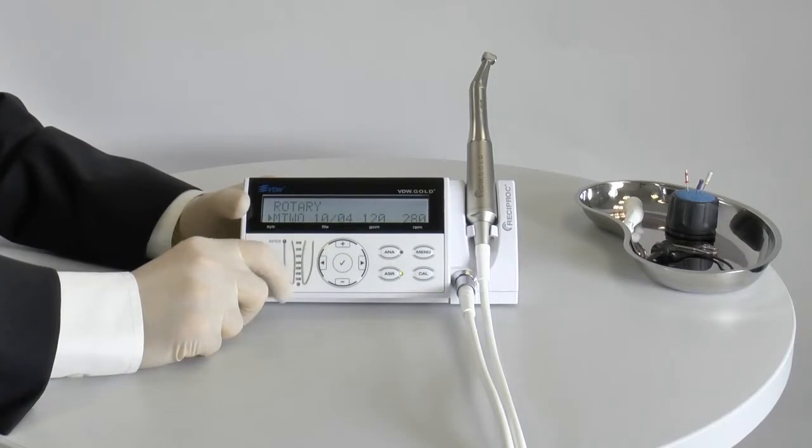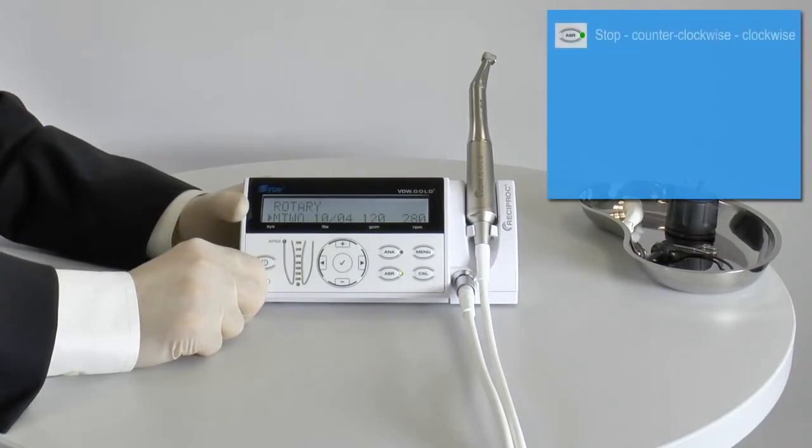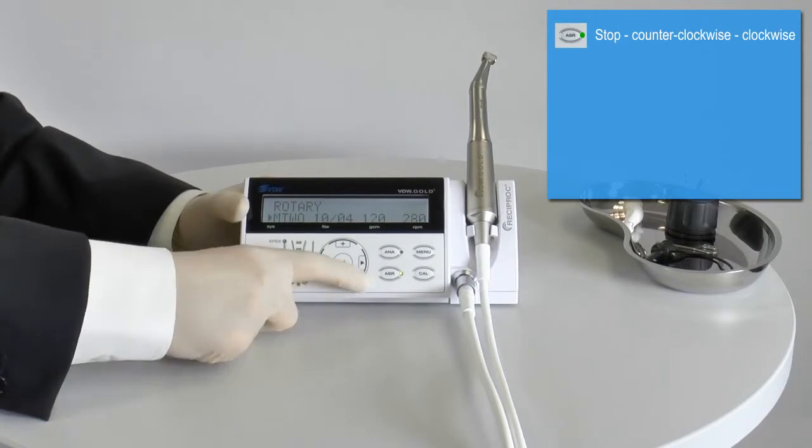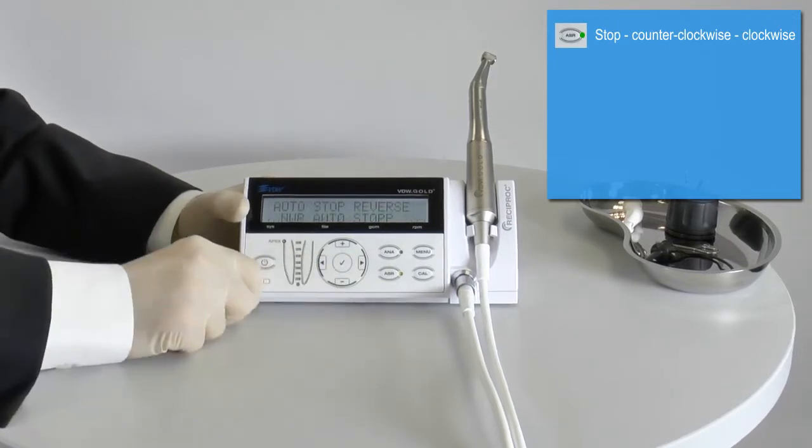When the preset torque limit is reached, the motor stops automatically and reverses into counter-clockwise direction until the file has freed itself. Then the motor will revert back to clockwise rotation.